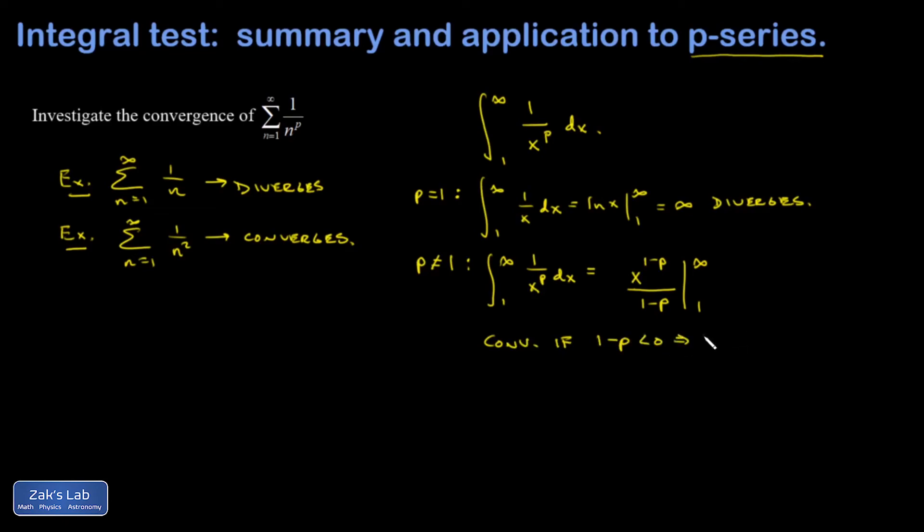If I don't meet this requirement, if 1 minus p is greater than 0, then this up here is a positive exponent. And if I take an infinite number to a positive exponent, I get infinity, and it diverges. This diverges if 1 minus p is bigger than 0. In other words, if 1 is greater than p. In other words, if p is less than 1.